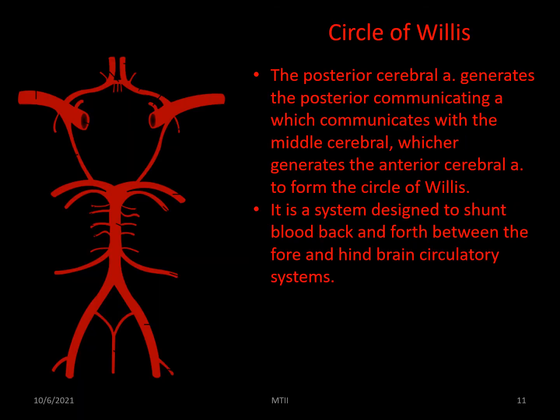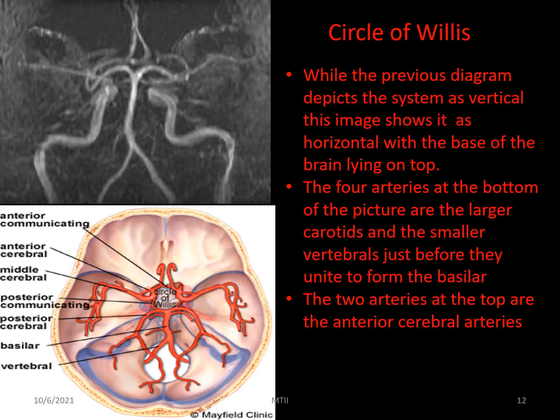The circle of Willis is the junction of the vertebrobasilar and carotid systems. The posterior cerebral artery gives off the posterior communicating artery, which joins with the middle cerebral artery. This gives off the anterior cerebral, and the two are joined by the anterior communicating artery, forming a complete circle around the base of the brain. Blood is shunted back and forth depending on the brain's requirements. Diagrams give the illusion that the entire system is vertical, but as the angiogram shows, the vertebral arteries run vertically while the circle is horizontal.